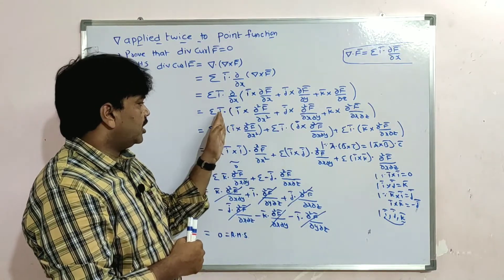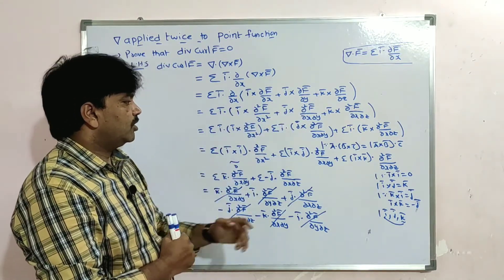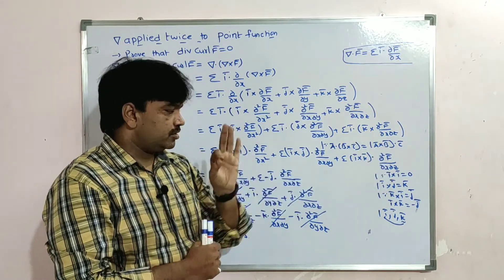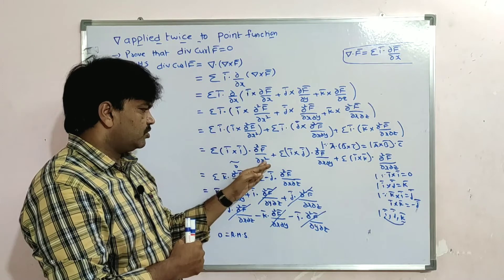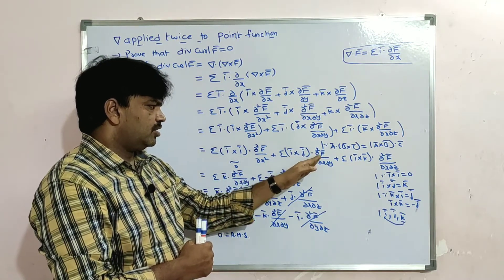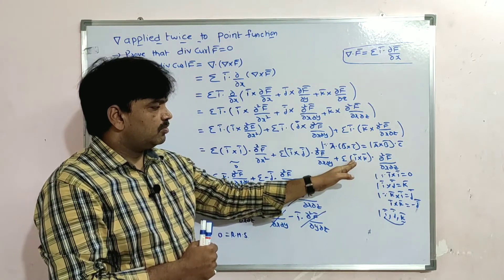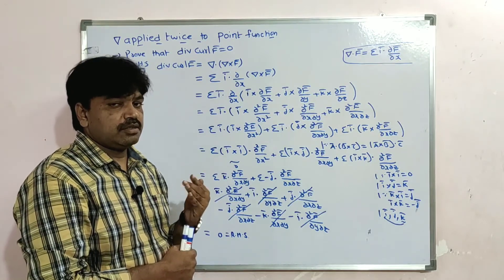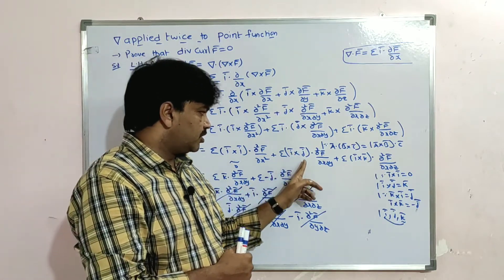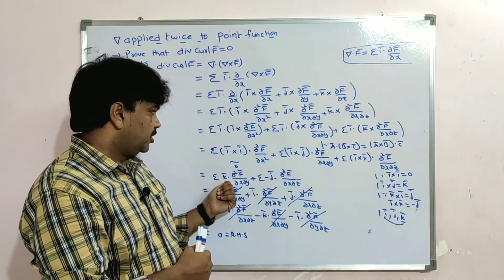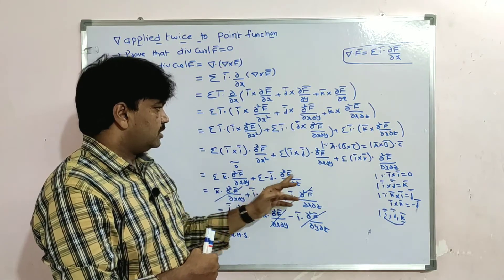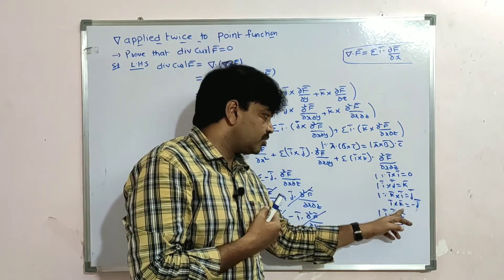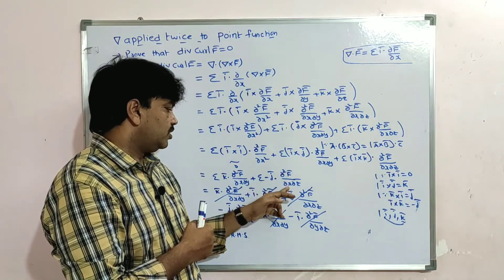Apply summation and i̅ dot on each term, then apply the formula a̅ dot (b̅ cross c̅) = (a̅ cross b̅) dot c̅. We get (i̅ cross i̅) dot (∂²F̄/∂x²) + (i̅ cross j̅) dot (∂²F̄/∂x∂y) + ... i̅ cross i̅ = 0, j̅ cross j̅ = 0, k̅ cross k̅ = 0. i̅ cross j̅ = k̅, so k̅ dot (∂²F̄/∂x∂y). i̅ cross k̅ = -j̅, so minus j̅ dot (∂²F̄/∂x∂z).